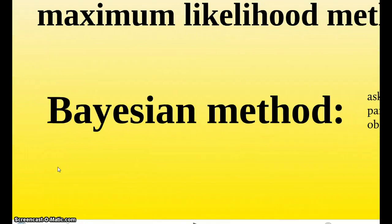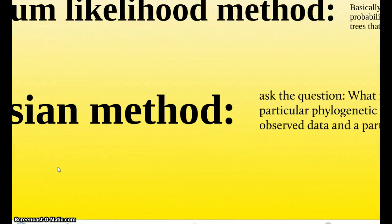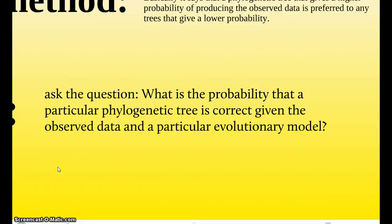And the last method would be the Bayesian method. And this one, basically, you'd ask yourself the question, what is the probability that a particular phylogenic tree is correct given the observed data in a particular evolutionary model? So, for this one, you would just think to yourself, based on all this observation, does this phylogenic tree make sense? Or is there another phylogenic tree that makes more sense based on the data? Because, remember, these scientists, they're trying to discriminate against all these phylogenic trees about the same species.